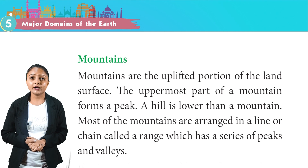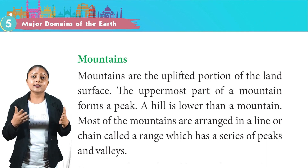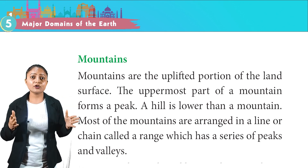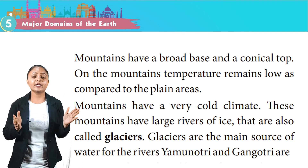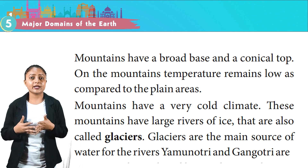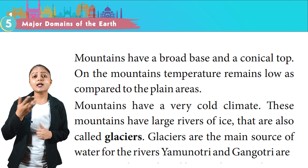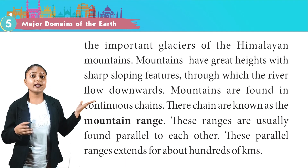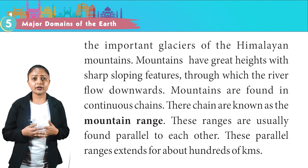Mountains are the uplifted portion of the land surface. The uppermost part of a mountain forms a peak. A hill is lower than a mountain. Most mountains are arranged in a line or chain called a range, which has a series of peaks and valleys. Mountains have a broad base and a conical top. Temperature remains low on mountains compared to plain areas. Mountains have large rivers of ice called glaciers, which are the main source of water for many rivers. Yamunotri and Gangotri are important glaciers of the Himalayan mountains.